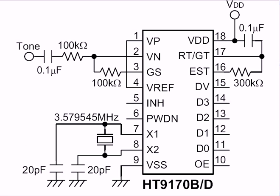Let's try to understand the DTMF decoder IC 9170B. This is a 18-pin IC which has an input arrangement at pin number 2 with a C and R arrangement. It has to be connected to a crystal of 3.579545 MHz in this arrangement. We also have an R and C arrangement for a certain frequency internal oscillator. And these are the outputs D0, D1, D2, and D3.